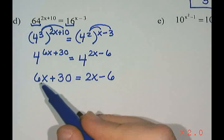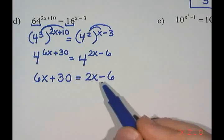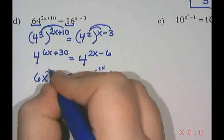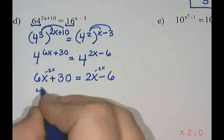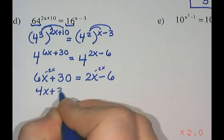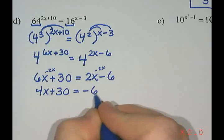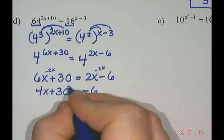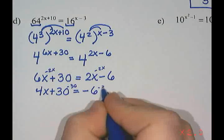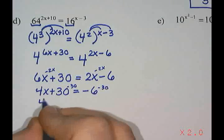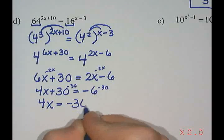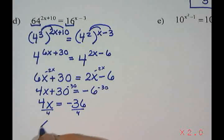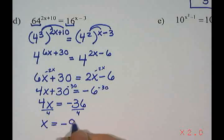The bigger x is on the left side, so I'll subtract 2x from both sides, giving 4x plus 30 equals negative 6. Subtracting 30 from both sides: 4x equals negative 36. Dividing by 4 gives x equals negative 9.